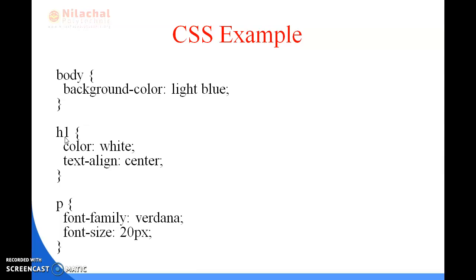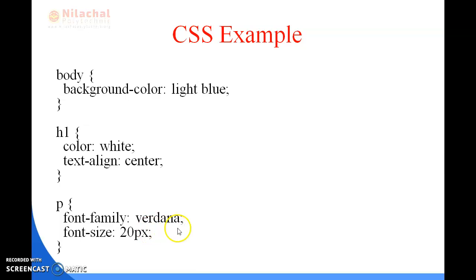H1 is for heading purposes. In HTML, there are six types of heading tags, and H1 represents the highest size of heading. Here, the H1 heading color is changed to white and text-align is set to center, meaning the text is aligned to the center position. P is for the paragraph, font-family is set to Verdana — meaning the font type — and font-size is 20, representing the font size for the paragraph. This is the example of CSS.